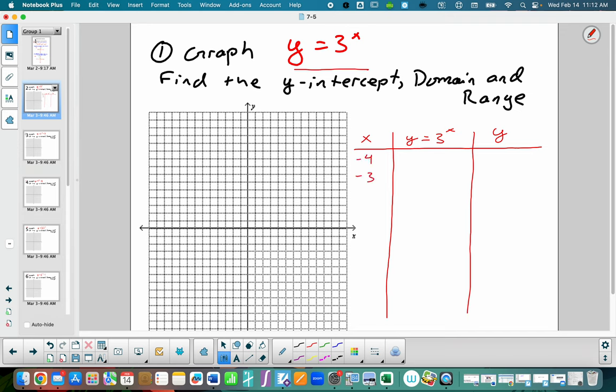So we're going to list negative 4, negative 3, negative 2, negative 1, 0, 1, 2, 3, and 4. In the middle column, all I'm going to do is just plug these numbers in for x.